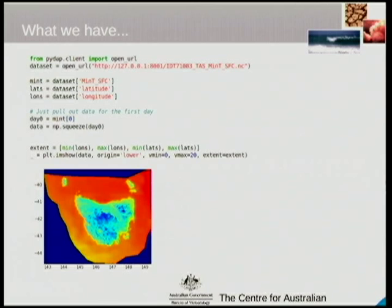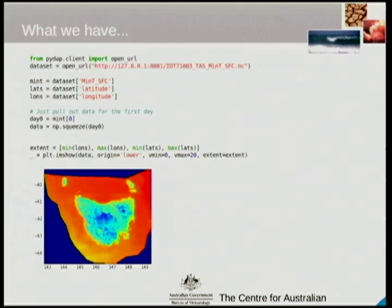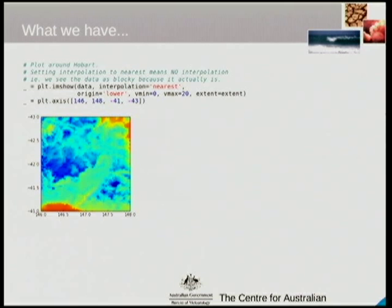It's very easy with the IPython notebook, because of its matplotlib support, to plot that out. As you can see, this is an example of some data which is a forecast for minimum temperature around Tasmania. And because it's geographically based, maybe we would like to take a closer look at a particular area. This is a plot that's zoomed in around the lat/long that represents Hobart.